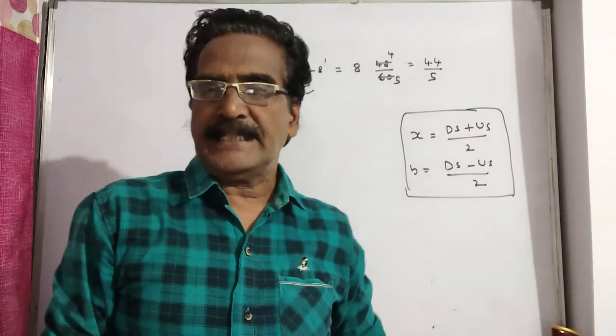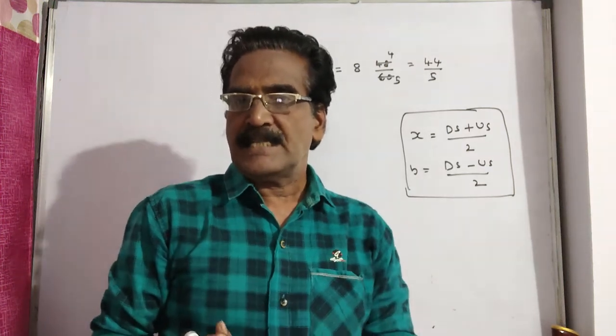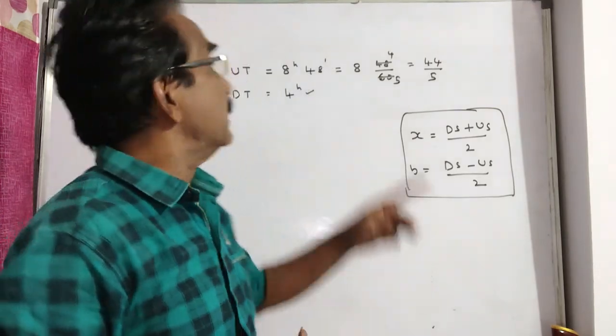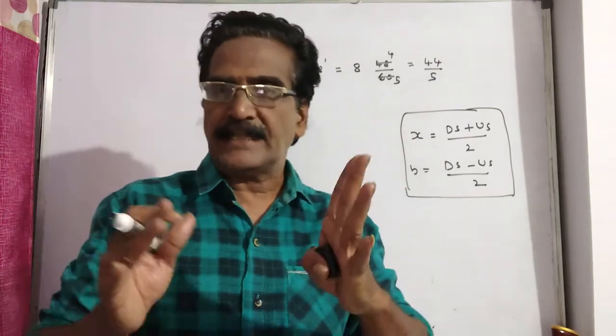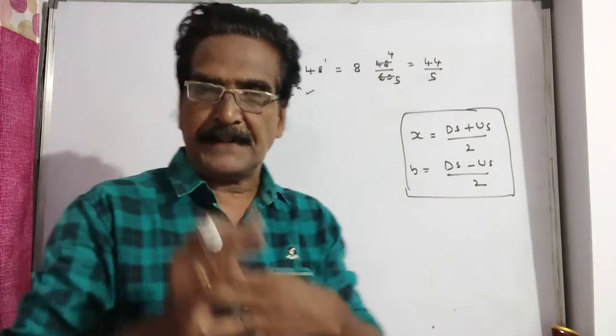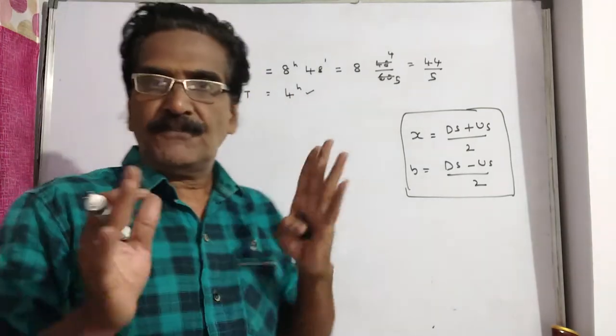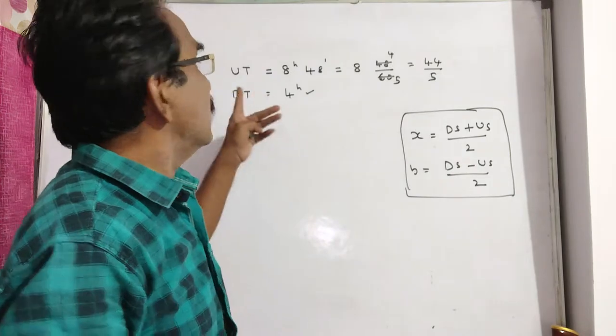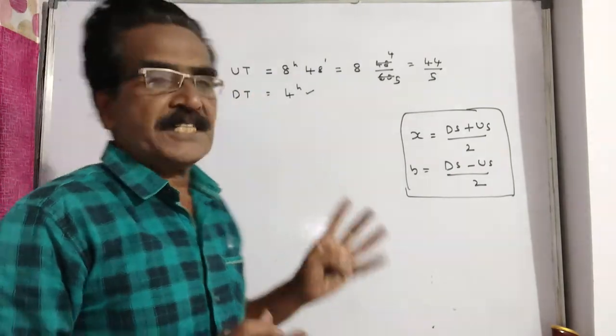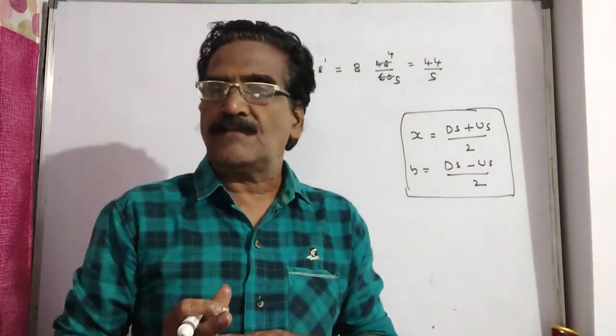Hi friends, good morning. Please look at the next problem in boats and streams. A boat takes 8 hours 48 minutes to travel a certain distance upstream, while it takes 4 hours to travel the same distance downstream. What is the question? What is the ratio?